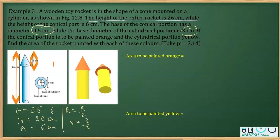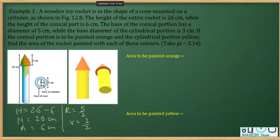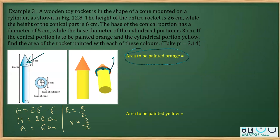Reading further, the conical portion has to be painted orange and the cylindrical portion is to be painted yellow. A common mistake is to find only the curved surface area of the cone for the orange portion. But when you look at the figure, there is a ring formed because the bases are not the same size. So we need to find the area of that ring as well in order to find the total area to be painted orange.